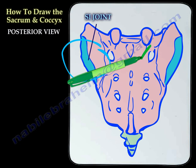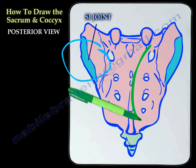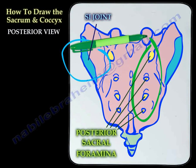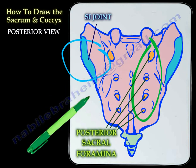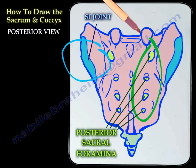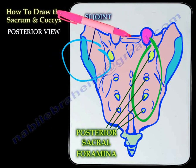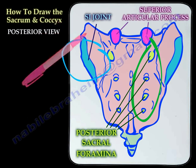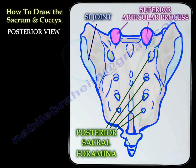Then you can see the sacral foramina. There are several of them. They are the posterior part of the foramina, and you can also see the superior articular process that articulates with the L5 vertebra.